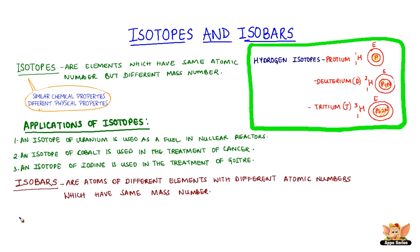There are few atoms of different elements having different atomic numbers but the same mass number. These are called isobars. Calcium, having 40 as mass number and 20 as atomic number, and argon, having 40 as mass number and 18 as atomic number, are isobars.